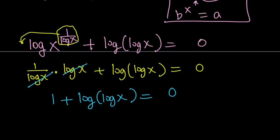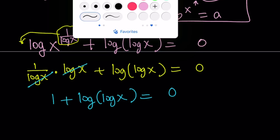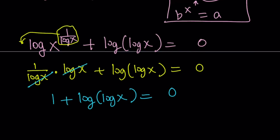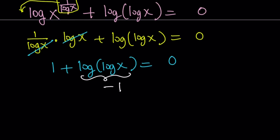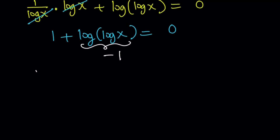So 1 plus something equals 0 — what do you get? It needs to be negative 1, right? So 1 plus negative 1 equals 0. From here we get the simpler equation: log of log x equals negative 1.